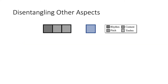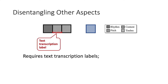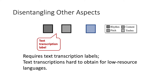In fact, people have been trying to disentangle the rest of the aspects, but it turns out to be a very challenging task unless one also has access to the text transcription label. This is because the text transcription provides a label for the content information, so that it can be identified and separated from the rest of the information. Without such labels, the decomposition becomes an ill-defined problem. However, we would like to avoid using text transcriptions, because for many languages in the world, obtaining the text transcriptions is expensive and difficult.